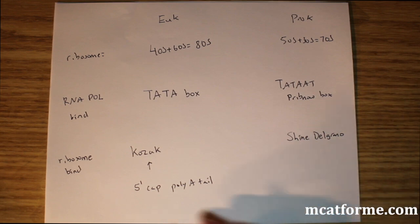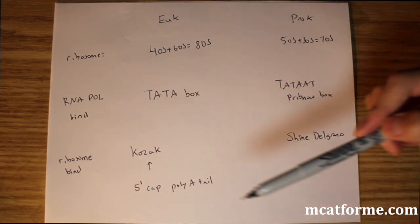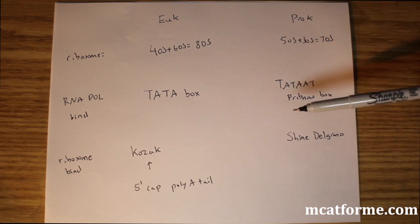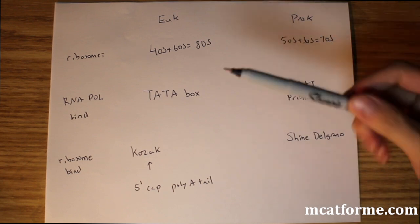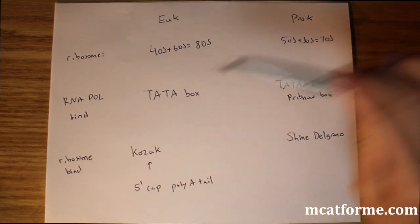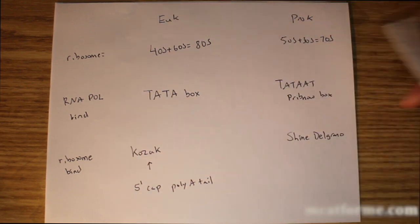We have post-transcriptional modifications for eukaryotes—that's the 5' cap and the poly-A tail. If you see any of this on the test, they'll probably ask where the TATA box is, what it's for, and who has it—prokaryotes or eukaryotes? Just be familiar with these. These are things you have to memorize.